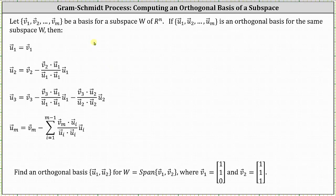In this lesson, we will look at an example of how to apply the Gram-Schmidt process to compute an orthogonal basis of a subspace defined by the span of two vectors in R3. Let the set of vectors containing vectors V sub one through V sub M be a basis for a subspace W of Rn. If the set containing vectors U sub one through U sub M is an orthogonal basis for the same subspace, then the following formulas apply in order to find the orthogonal basis.